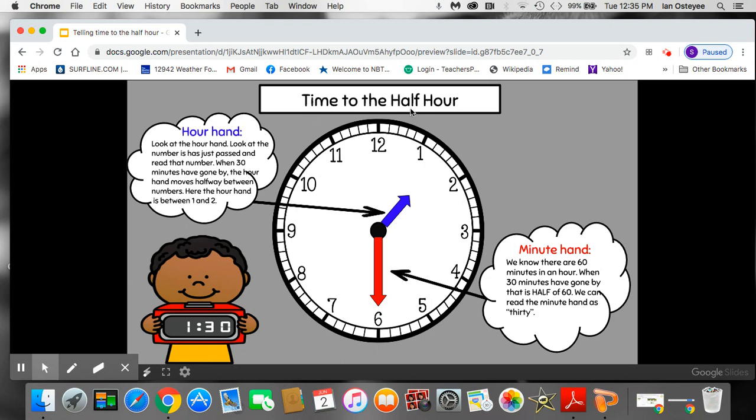Time to the half hour. Well we know this is an analog clock. It has a face where the numbers are. It has an hour hand which is short and it has a minute hand which is long. This is a digital clock. It also has a face where the numbers are located. It has a spot for hours, a spot for minutes, and a colon to separate the hours and the minutes.